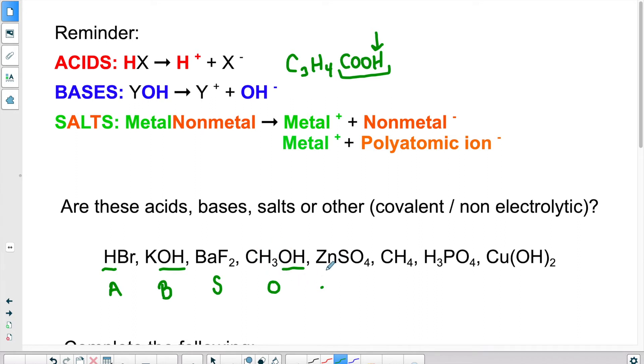Here we have metal with a polyatomic ion. So a bunch of non-metals. So this would be a salt. Here we have only non-metals. So it's an other, because it will not form ions. Here we have something that starts with an H, or three H's I should say. So in this case we have an acid. And lastly, we have metal and hydroxide. So we have a base.